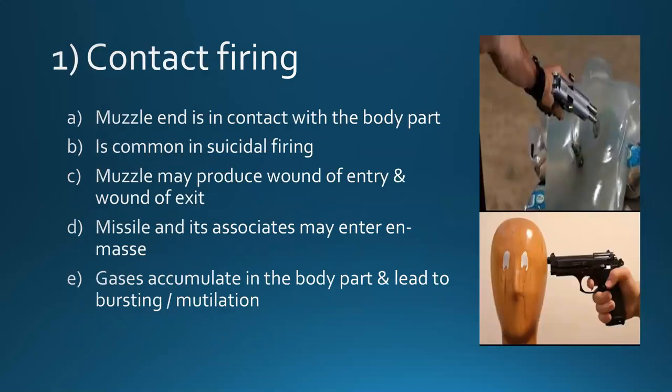In contact or point blank firing, the muzzle end is in contact with the body part. This type of firing is commonly seen in suicidal cases and may produce both a wound of entry and wound of exit. The missile and all its associates enter en masse. Sometimes gases accumulate in the body part causing cavitation, which may lead to bursting or mutilation of the body part.